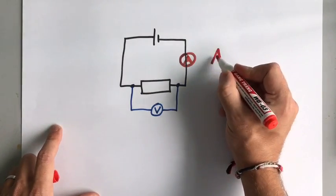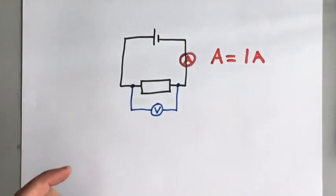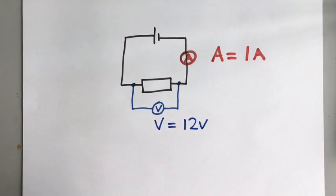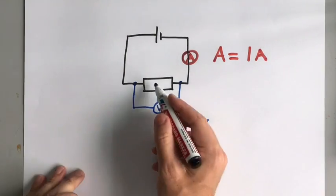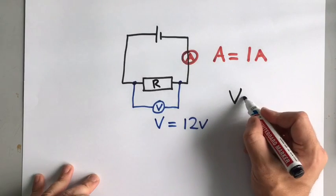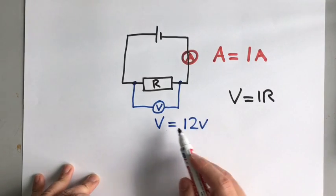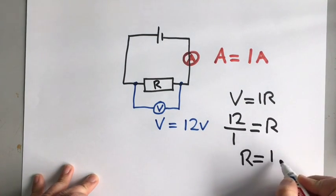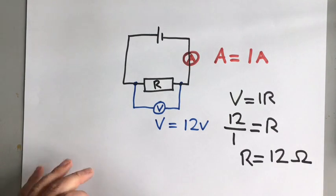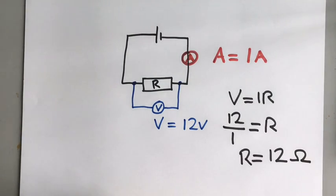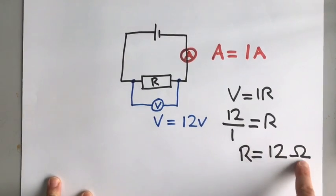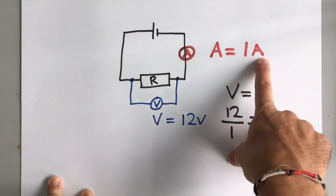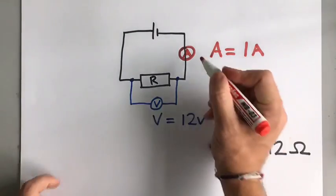So if we have a current of one amp and a voltage of 12 volts, we can find the resistance of the circuit because V = IR. V is 12, current is 1, so resistance is 12 ohms. Resistance is measured in ohms — the symbol is the Greek letter omega (Ω). Voltage or potential difference is measured in volts, and current is measured in amps, with the letter I.